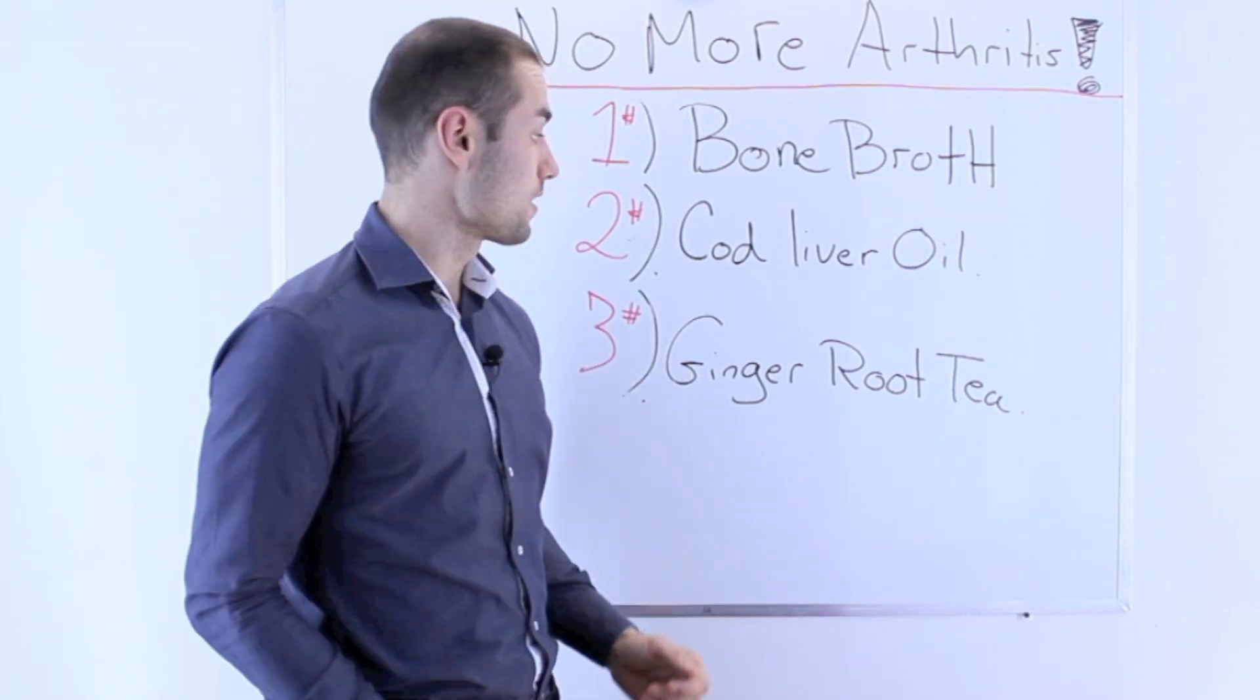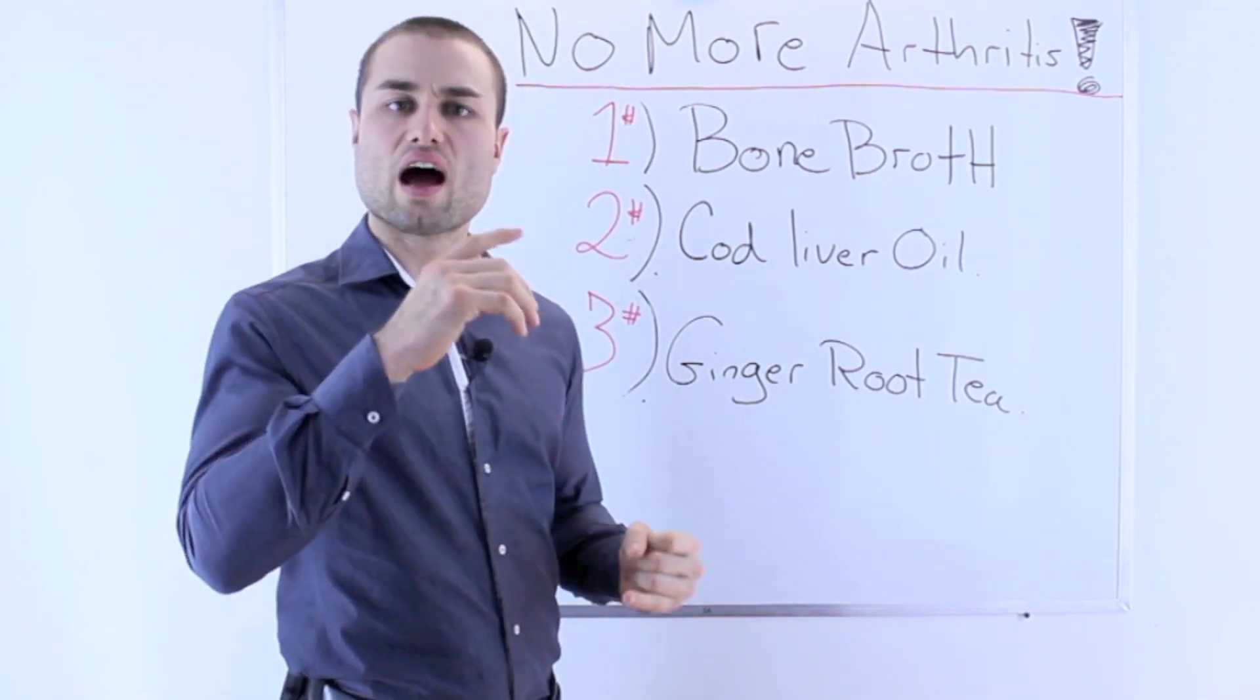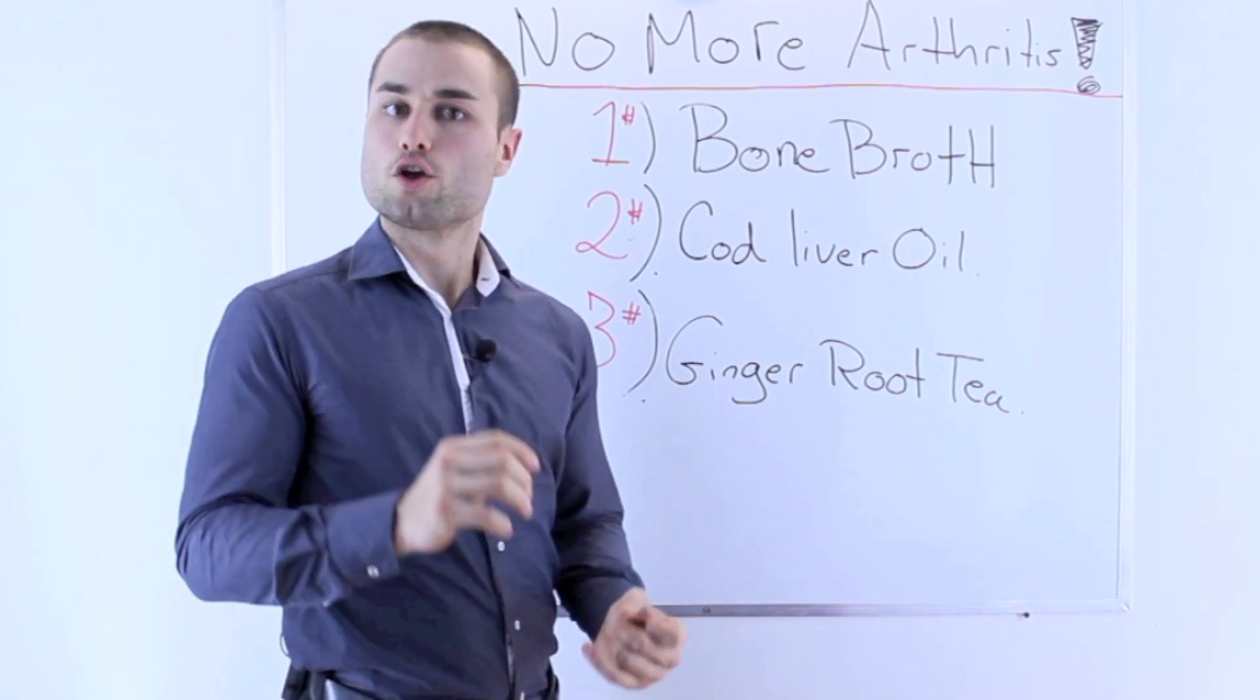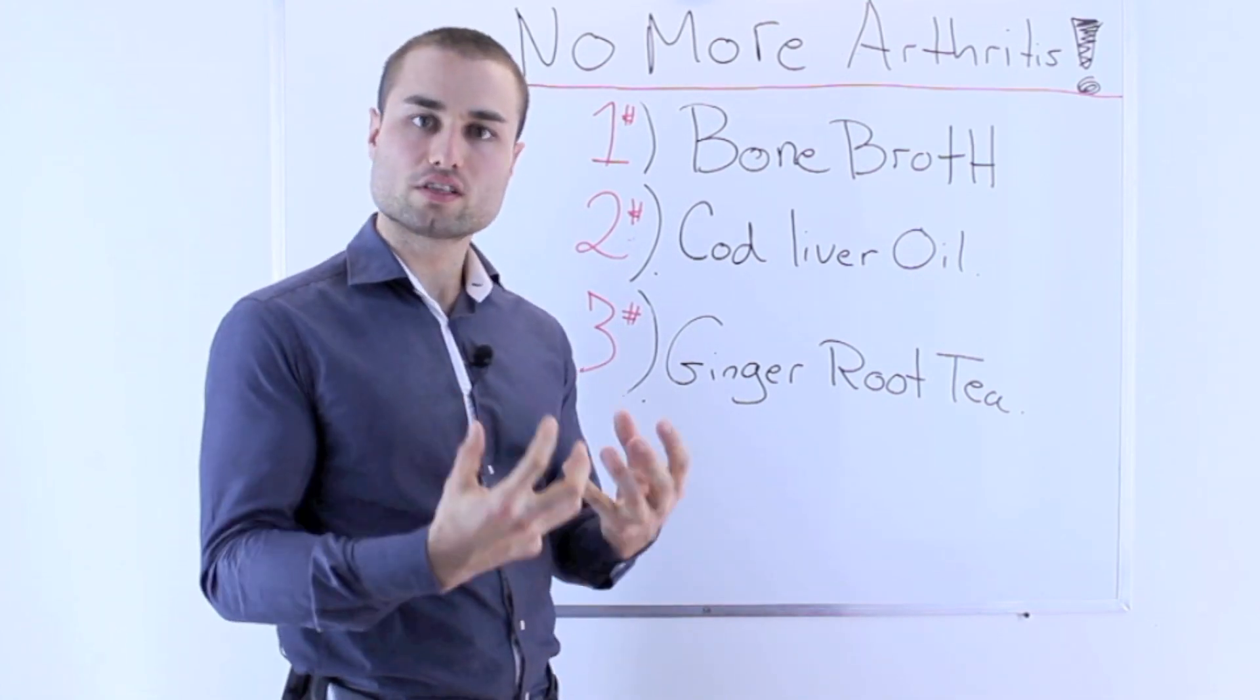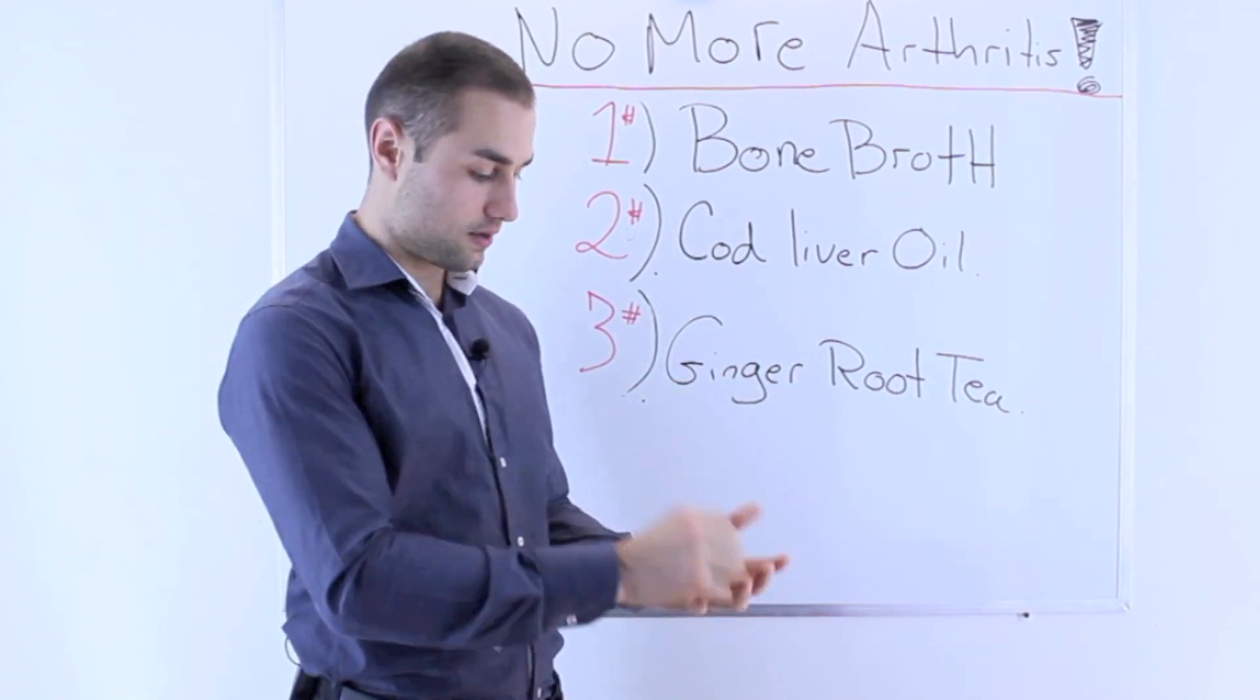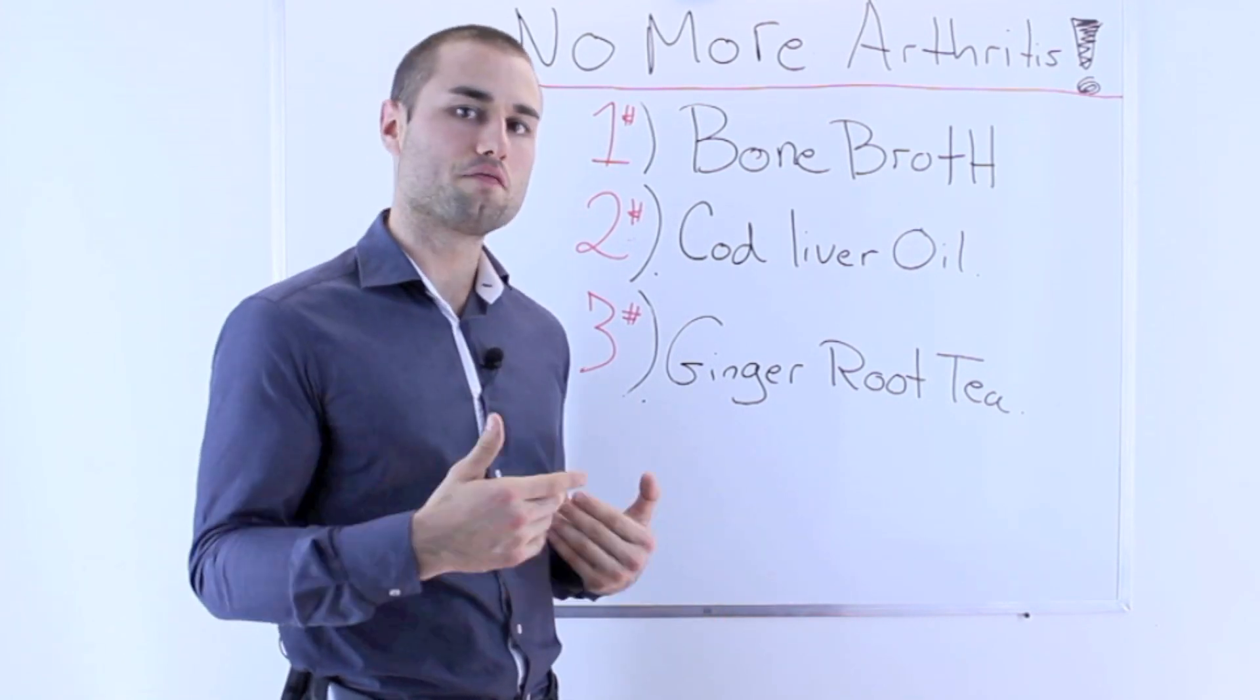Number three: ginger root tea. A very simple thing that you can do every single day. You go to the grocery store, grab yourself actual ginger root, shred it up nicely, add some hot water, and steep it anywhere from 10 to 15 minutes. Once it's steeped, you got yourself tea.